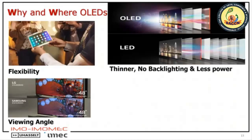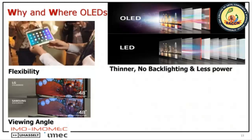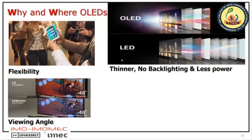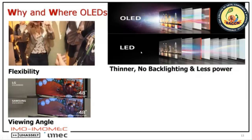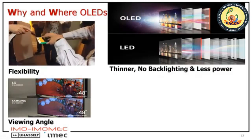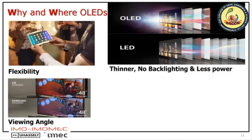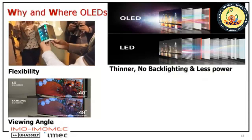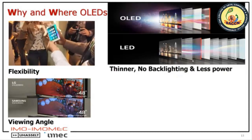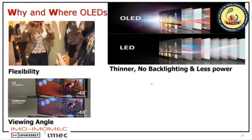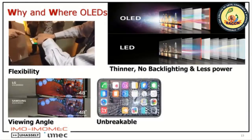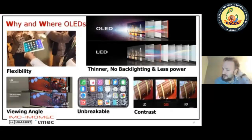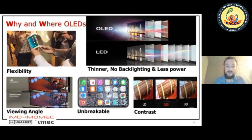Another example: for regular LED lighting, you always need some kind of distribution plane to guide light in a homogeneous way. For organic light emitting devices, because they have this Lambertian radiation pattern, you don't need backlighting and you don't need that layer on top. So it's thinner, it has no backlighting, it uses less power, it's considered unbreakable because it's organic, and it has very high contrast compared to phosphor-based devices.